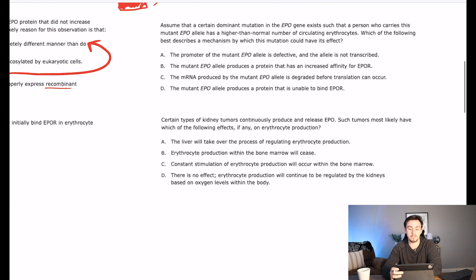The next one says assume that a certain dominant mutation in the EPO gene exists such that a person who carries this mutant EPO allele has a higher than normal number of circulating erythrocytes. So you've got a bunch of red blood cells. Which of the following best describes the mechanism by which this mutation could have its effect? Okay, so how could this mutation cause us to have a bunch of red blood cells? A says the promoter of the mutant EPO is defective and the allele is not transcribed. Well that would make us have less, right? So maybe not A.